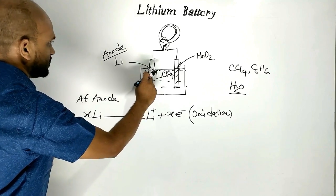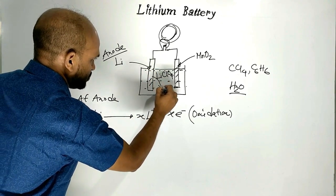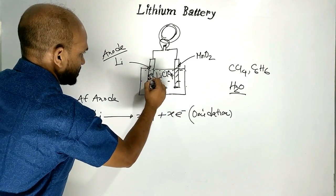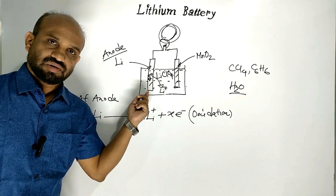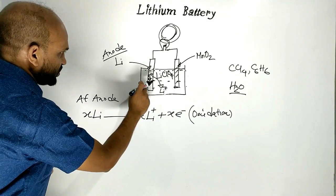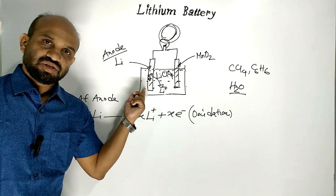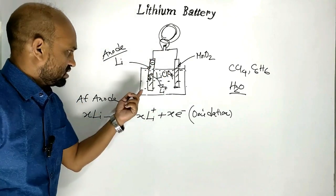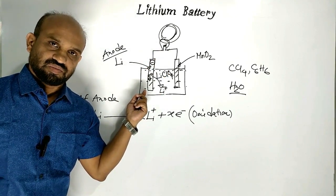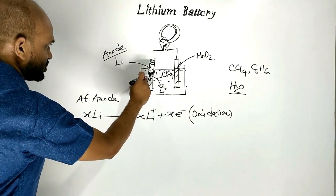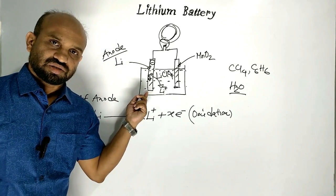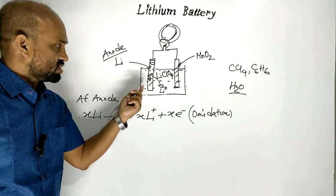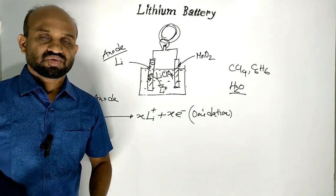Lithium atoms from the lithium electrode go into the electrolytic solution as lithium ions, leaving electrons at the electrode. This means the electrode becomes electronically rich with the passage of time, so it is denoted by a minus charge, because electron density increases with the passage of time. So the lithium electrode is a kind of anode, which is negative in charge.